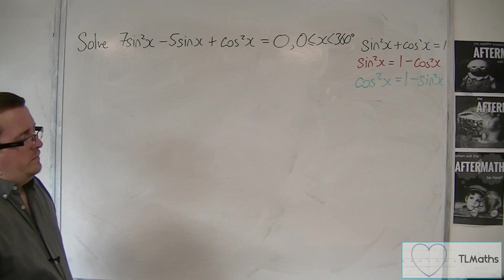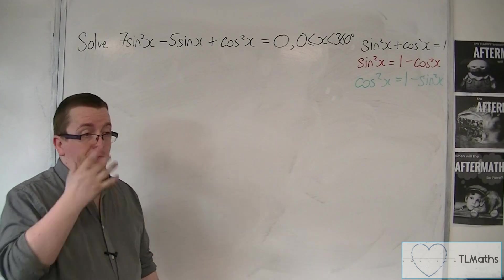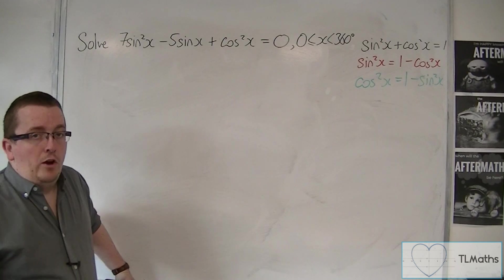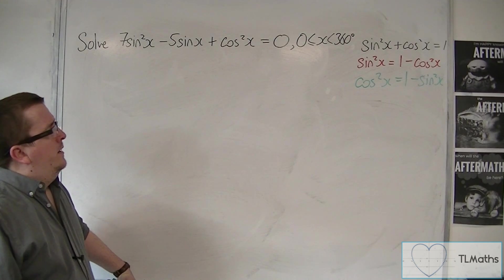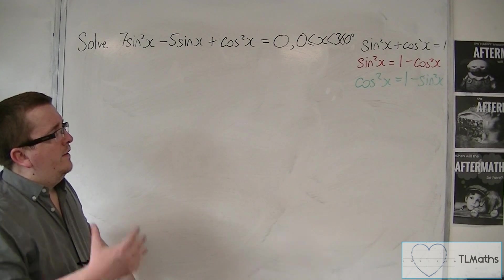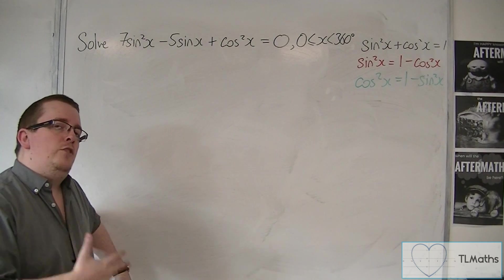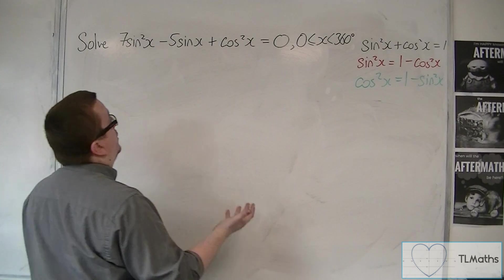First look at something like this - it may appear quite horrible. But knowing that we have a trigonometric identity, sin²x + cos²x = 1, we know that we can make a replacement for sine squared or cos squared.